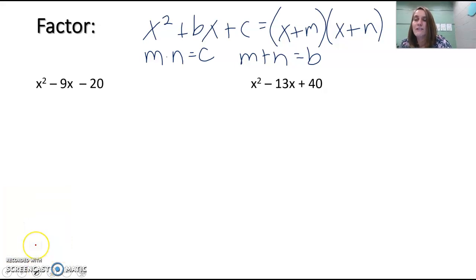Let's try the first one: x² - 9x - 20. Our c is -20 and our b is -9. What I like to do to keep organized is make a table. We're looking for numbers that multiply to equal -20 and add to equal -9.